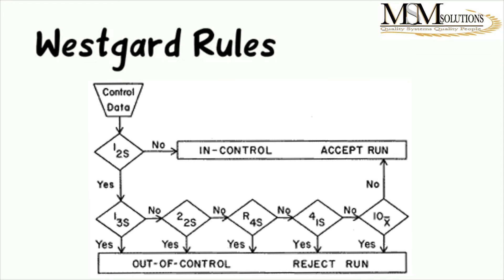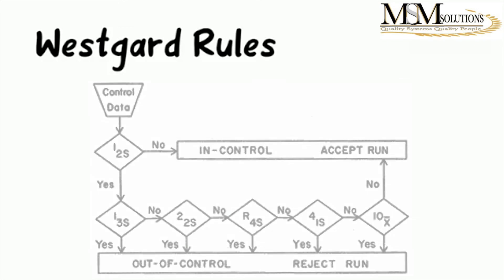So, what these rules come down to is: you look at your result, and based on how it appears relative to other points — remember, this is trend analysis — you determine whether you have a bias trend or not. These are the different rules you can apply to do that.